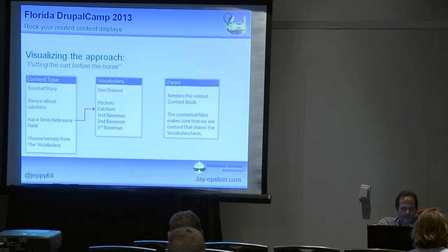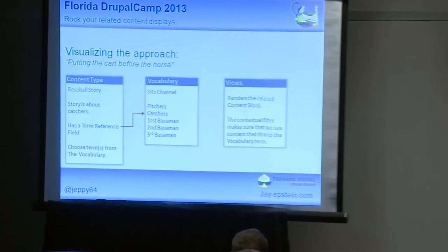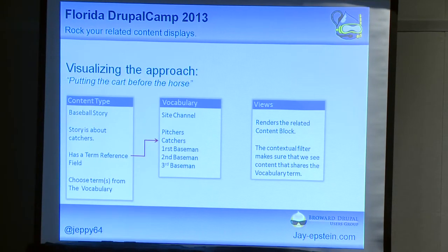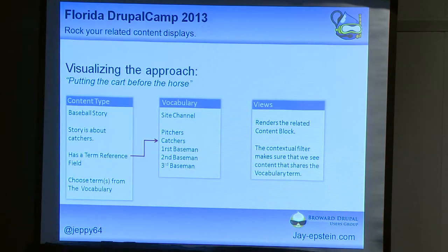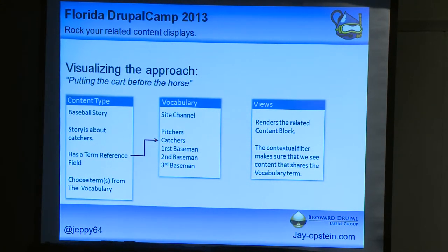Let's visualize this. We have a content type called baseball story. This particular story we're going to deal with is about catchers. All I need to do is put a term reference field on that content type and then tag the catchers channel. Now I've just classified that piece of content. Classification is all over the place — we all have these badge things, right? In my case, it's got my name, and it says 'presenter.' It's all about coming up with the most defined, straightforward approach to making that content unique.